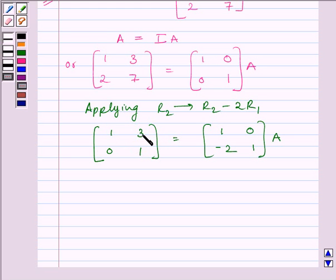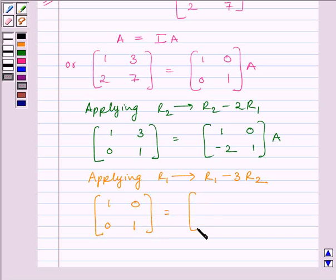Now, to make this element equal to 0, we will apply on R1 the row operation R1 minus 3R2. So, we can write, applying on R1 row operation R1 minus 3R2, we get matrix [1, 0; 0, 1] is equal to [7, -3; -2, 1] multiplied by A.